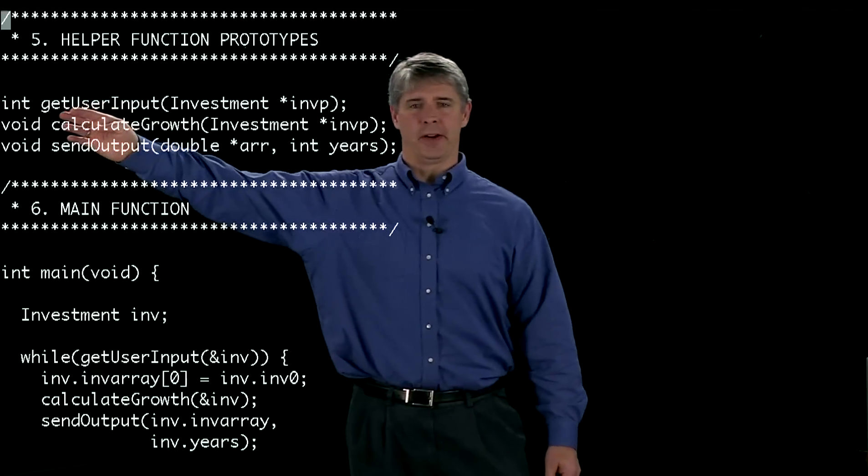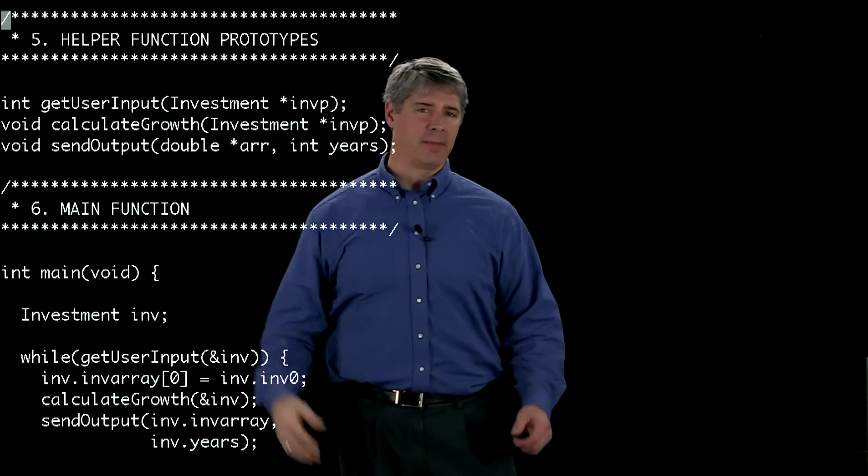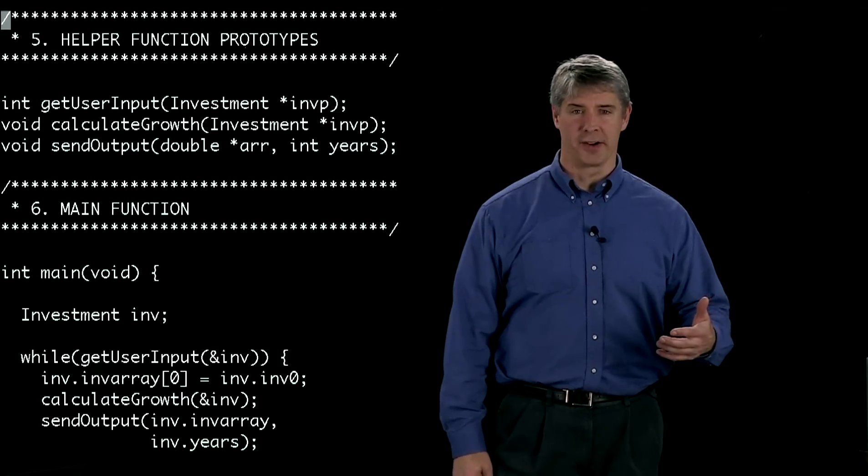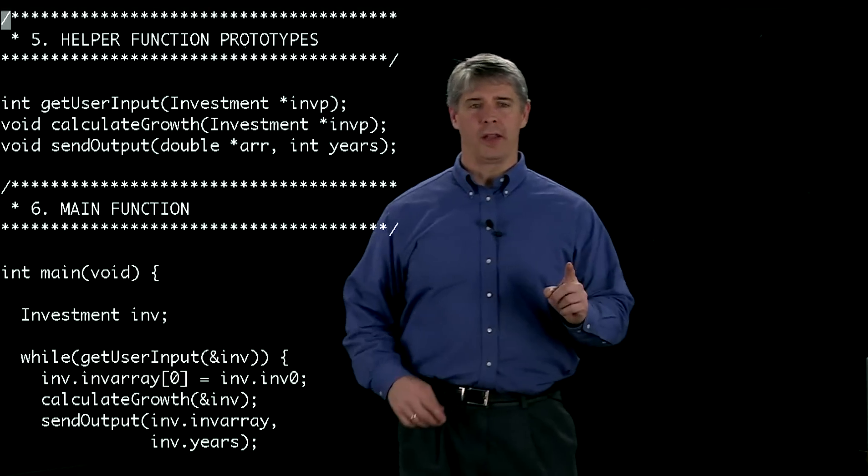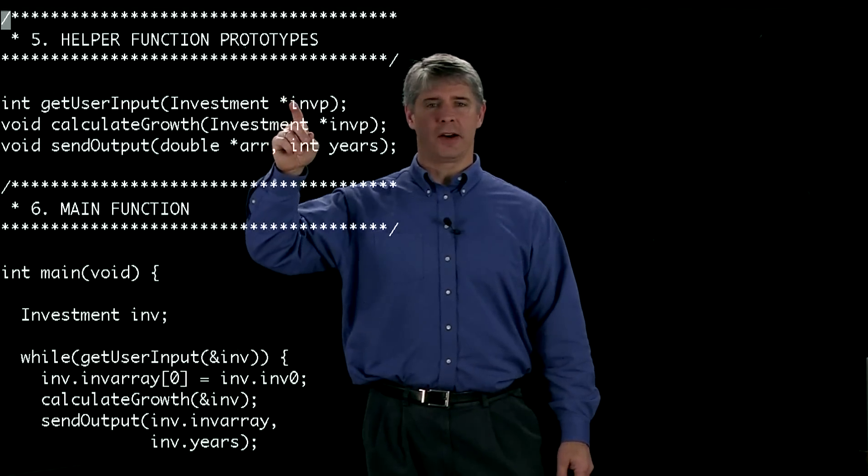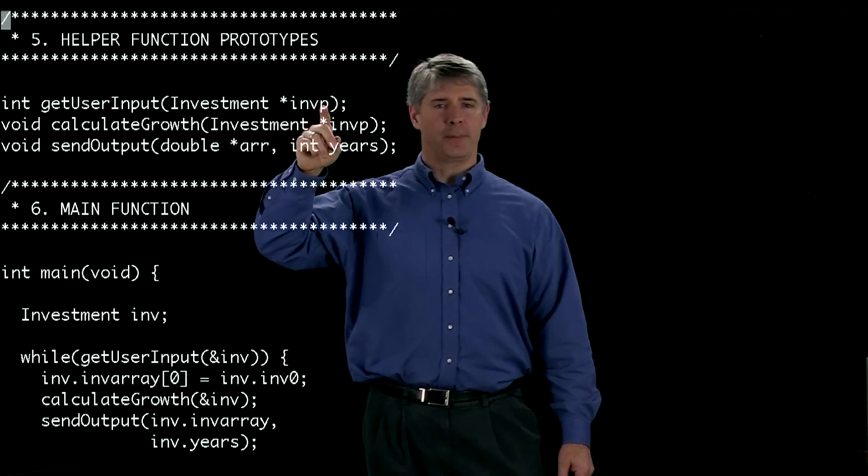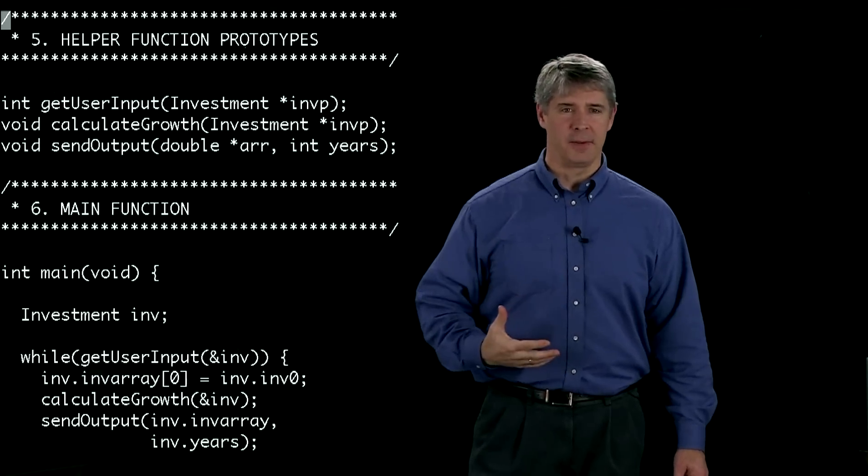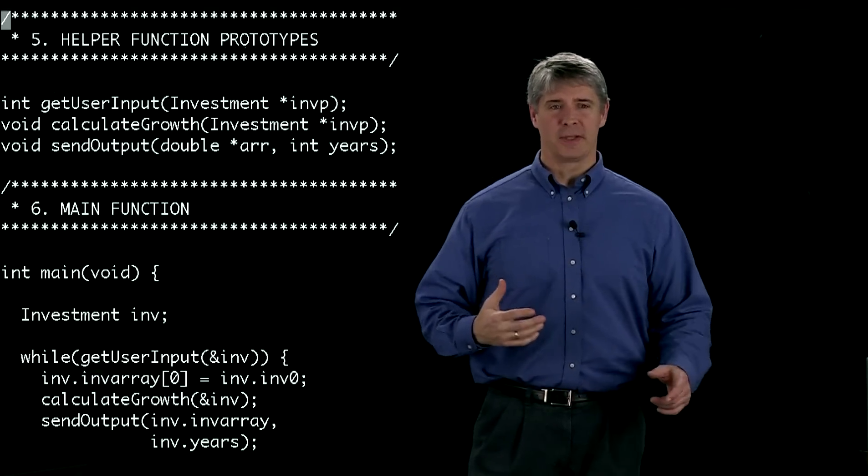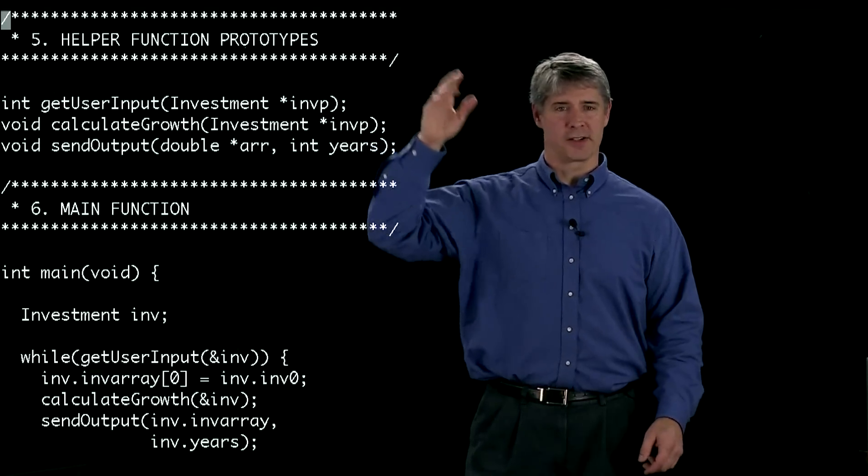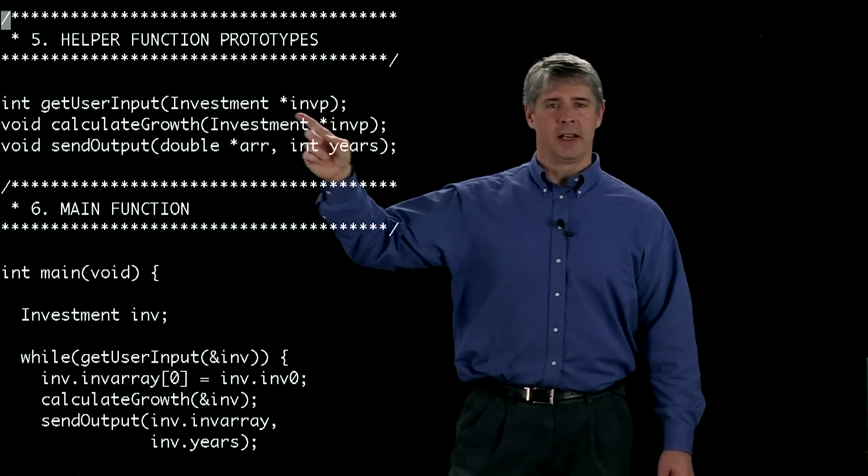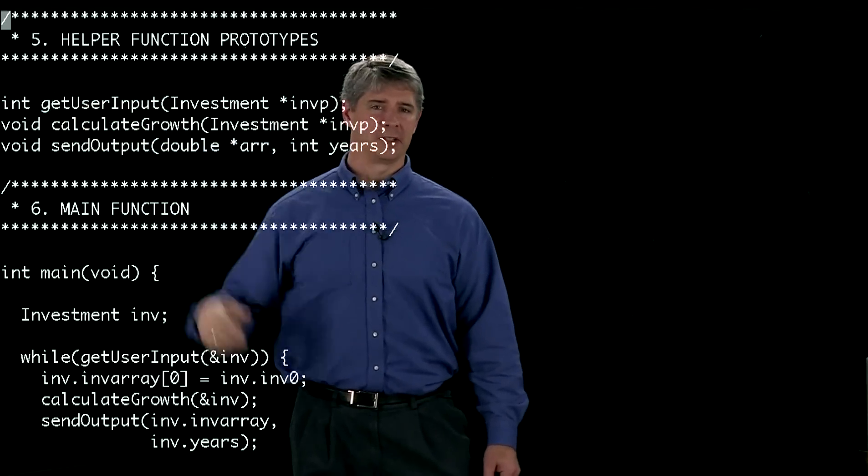So getUserInput here is of type integer. That means that this helper function is going to return an integer. And it takes one argument, this star. So we know now is a pointer to something of type investment. Investment is the data type that we defined just earlier in the program. So we're going to take a pointer to type investment and we're going to return an integer from this function.